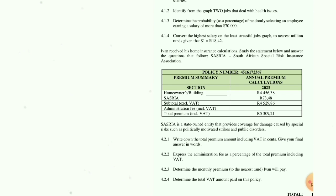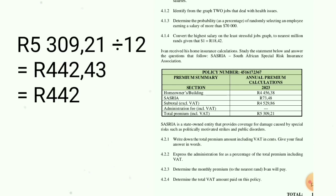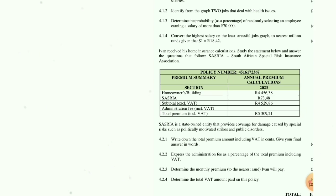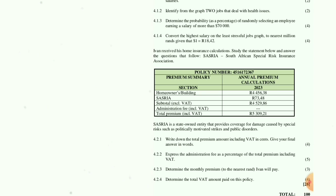Question 4.2.3: Determine the monthly premium to the nearest rand. R5 309.21 ÷ 12 = R442.43, which rounds to R442.